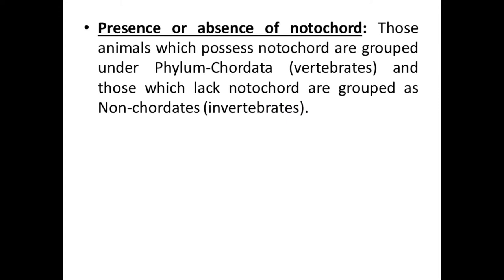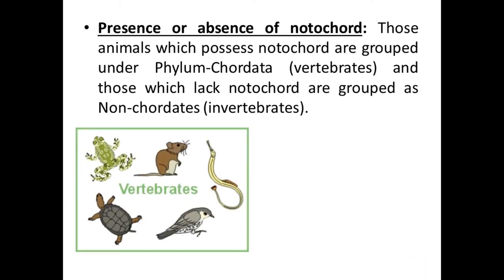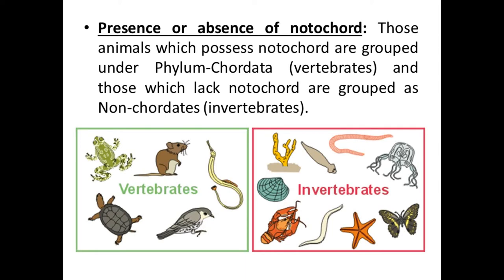The next criterion is presence or absence of the notochord. The notochord is a skeletal rod — like your backbone or vertebral column — responsible for posture and movement. Animals with a notochord present are known as vertebrates or chordates. Animals in which the notochord is absent are invertebrates or non-chordates.